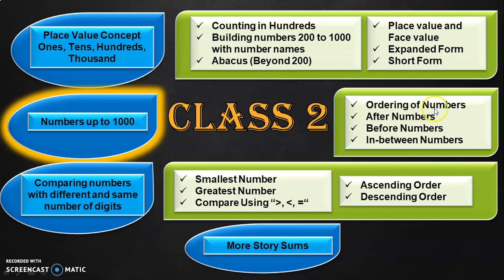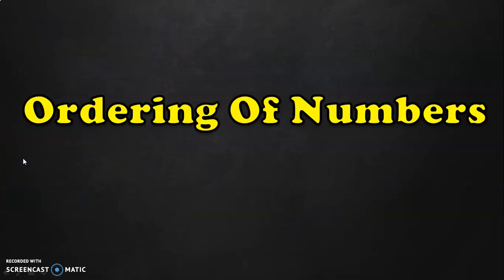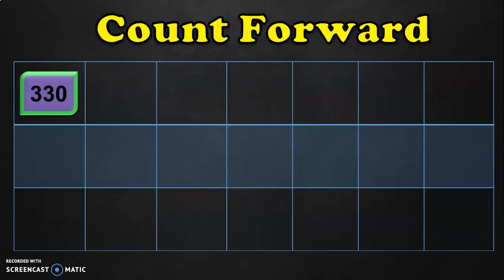We will be doing ordering of numbers: after numbers, before numbers, and in-between numbers. Let us first begin with ordering of numbers. What do you mean by ordering of numbers? Ordering means arranging numbers in a particular way — it could be in series, in forward or in the backward direction. We could also compare numbers and arrange them in ascending or descending order, which will be dealt with in a separate video.